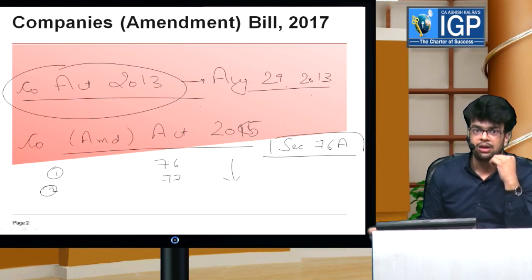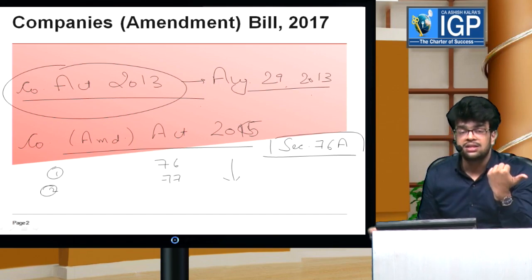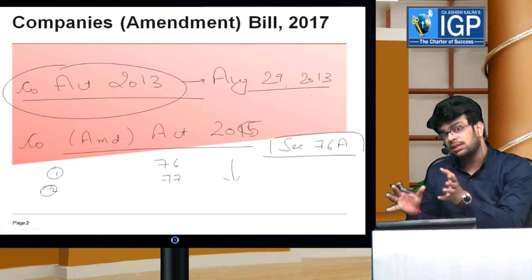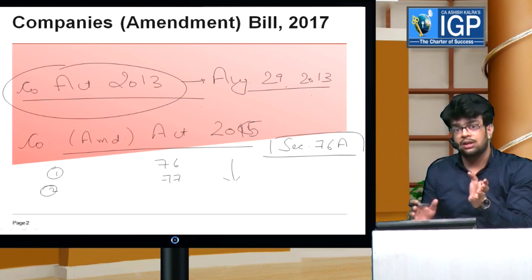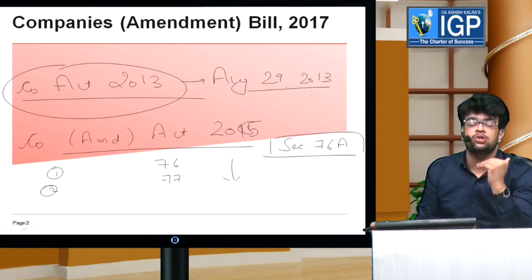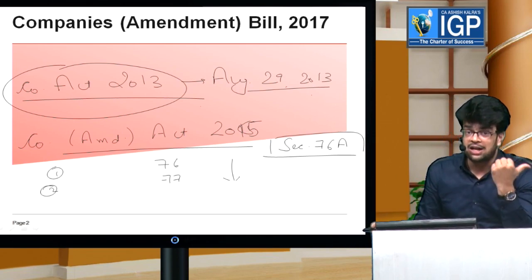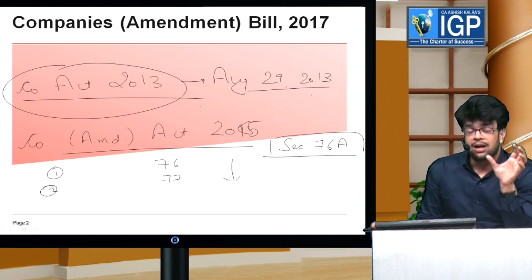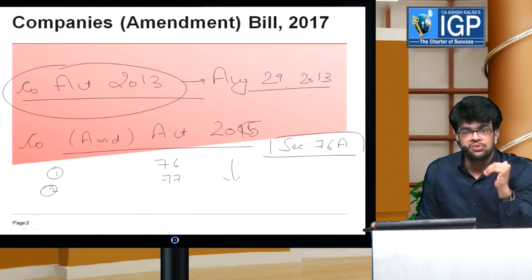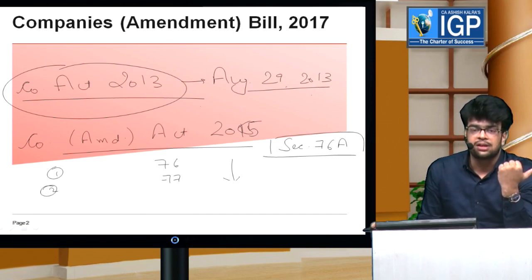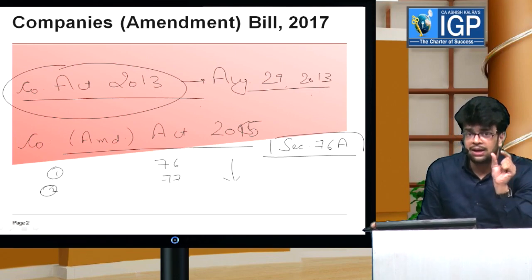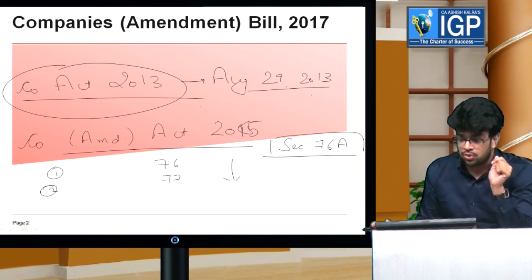If the government renumbers sections, then all of the succeeding sections would change their sequence. Apart from that, if the government has issued forms from MCA, wherever section references are used, all of those references would change too. So this was a very bulky exercise, and that's why a new section is not introduced in this way.